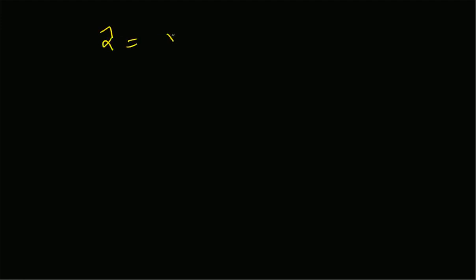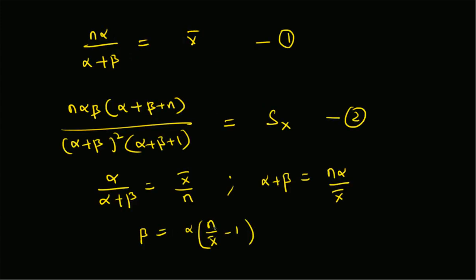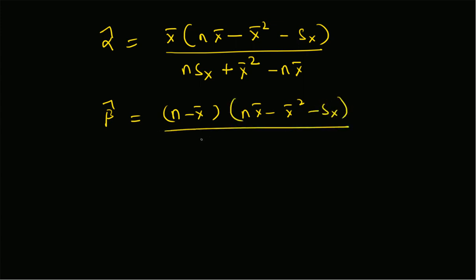Upon simplification, the estimate for α is: α̂ = x̄·(n·x̄ − x̄² − s²) / (n·s² + x̄² − n·x̄). And using the relation β = α·(n/x̄ − 1), the estimate for β is: β̂ = (n − x̄)·(n·x̄ − x̄² − s²) / (n·s² + x̄² − n·x̄). These are the method of moments estimates for α and β.